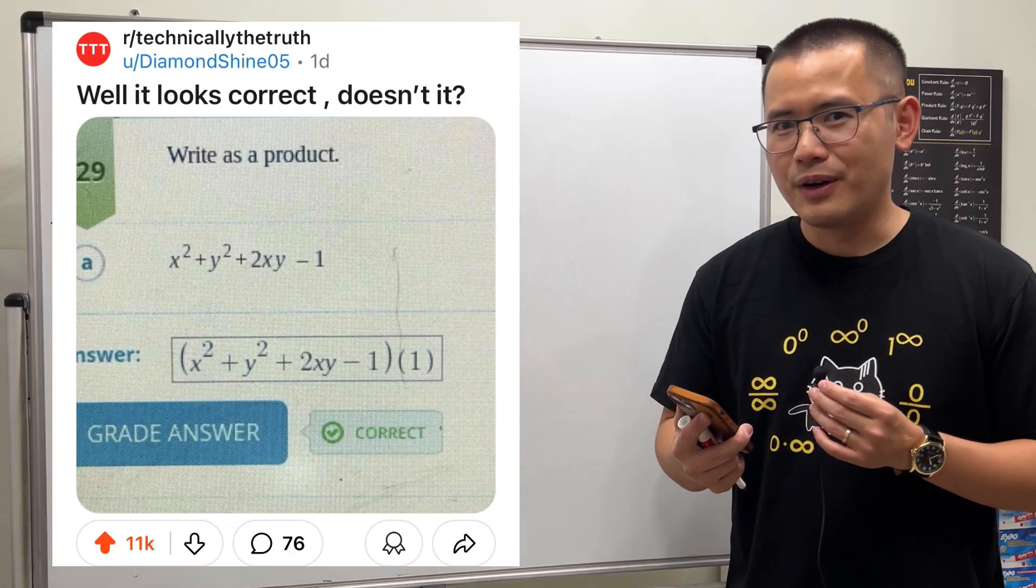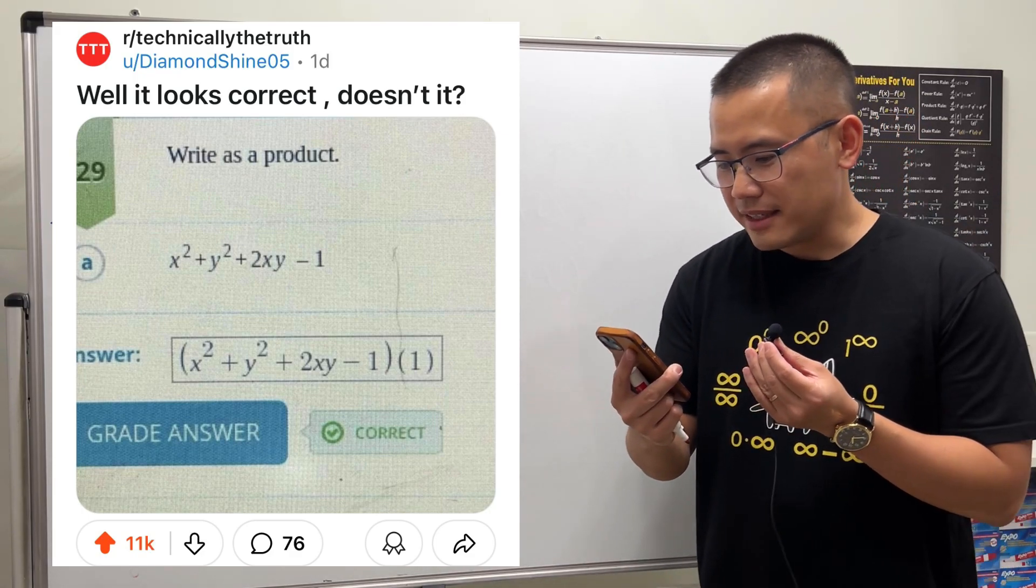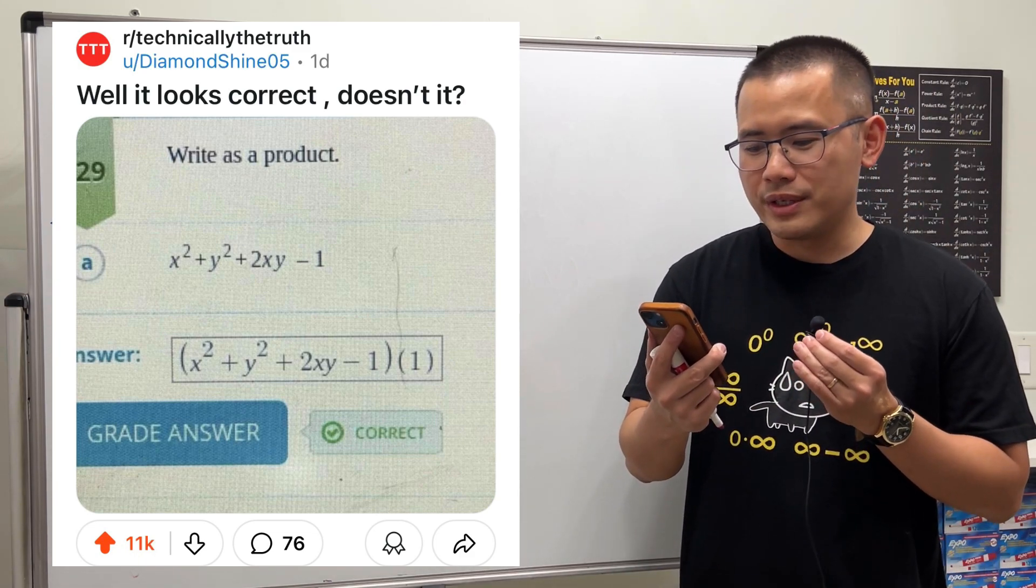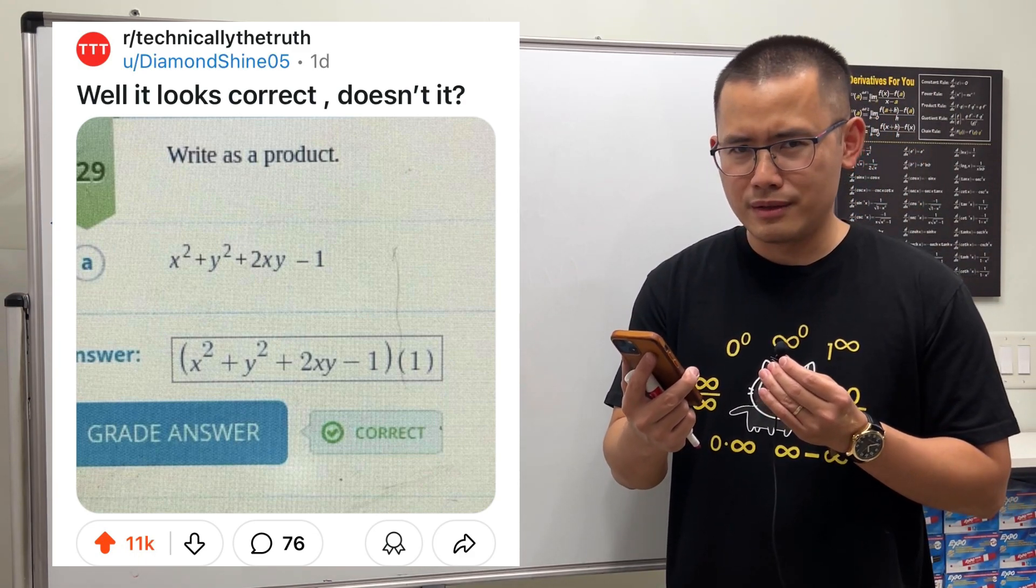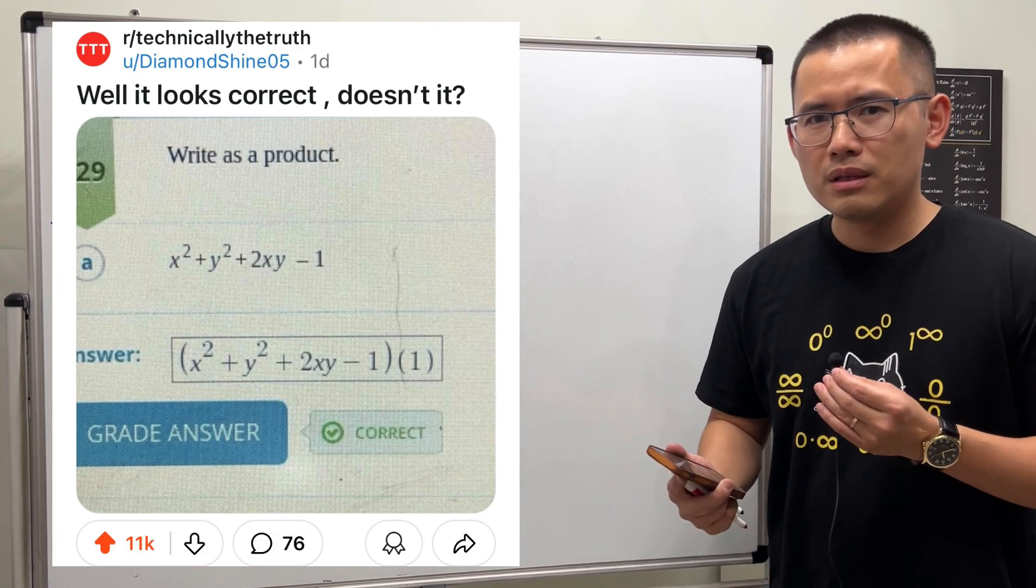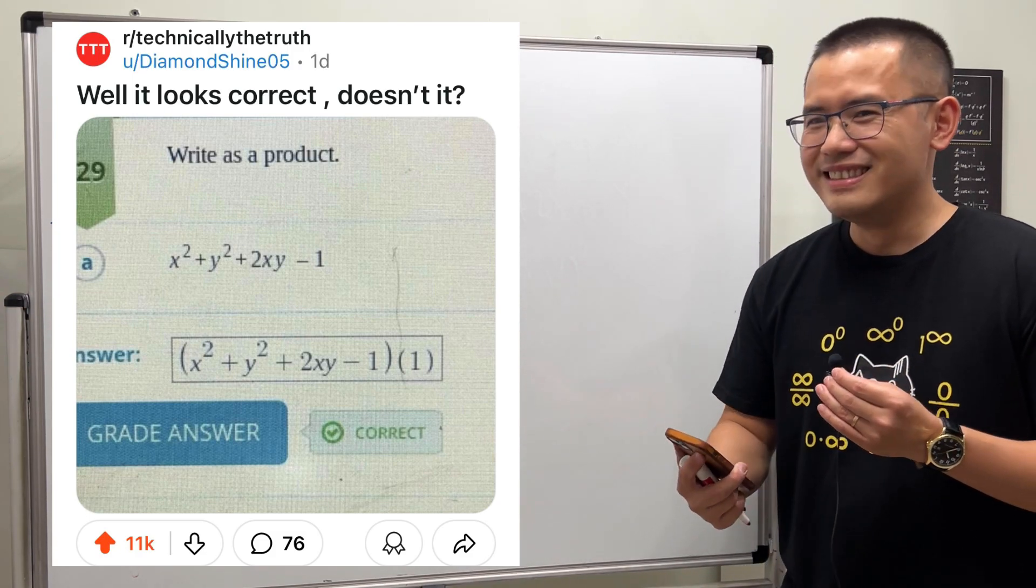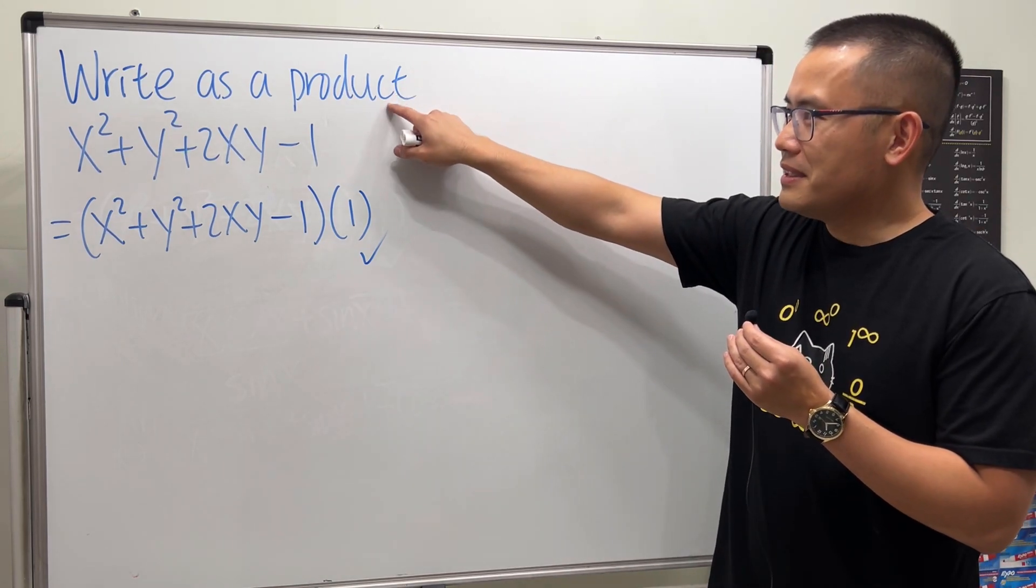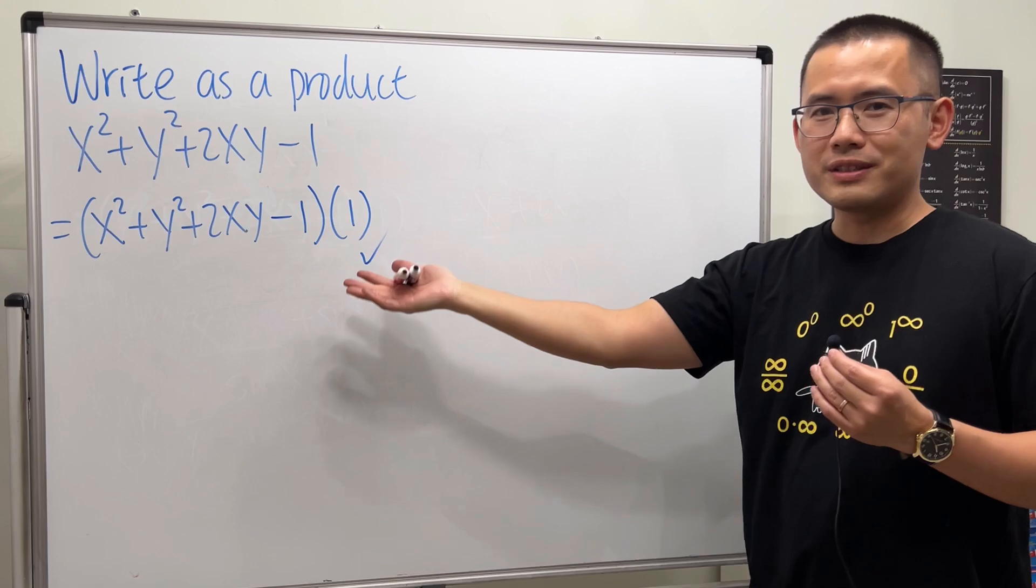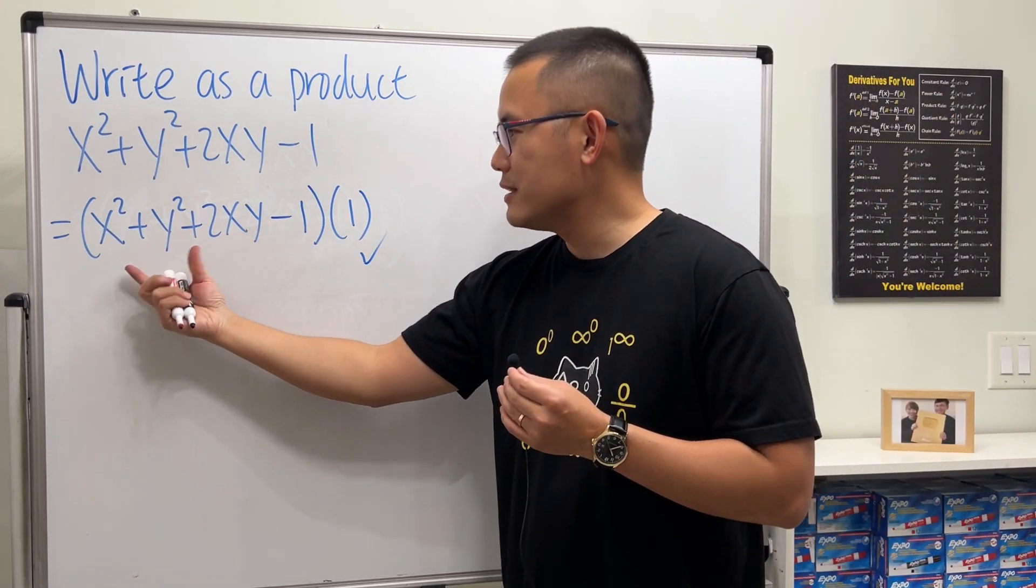All right, so this is a funny one I just saw on Reddit. The question is asking us to write the following as a product: x²+y²+2xy-1. And the answer is just that thing times one, and that's correct. Here's the deal: if this is the direction, then I will agree that this is okay, fine, whatever. It works because it is a product of this and one, which you get back to the original.